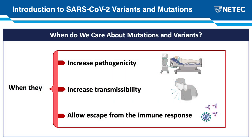Viruses mutate all the time, so we have to ask: when do we care about mutations and variants? For SARS-CoV-2, we're interested in identifying mutations and variants that might increase the pathogenicity of the virus, that might increase its transmissibility from person to person, and — especially now that vaccines are being rolled out — mutations and variants that may allow escape from the immune response. The variants we're discussing today each have at least one of these concerning features, which is why they've captured our attention.